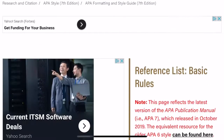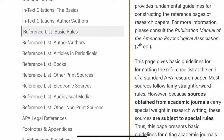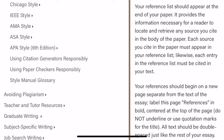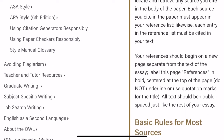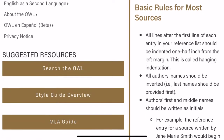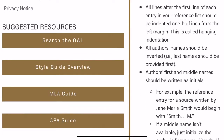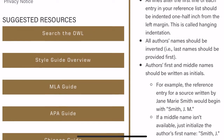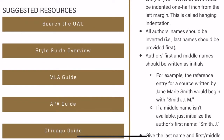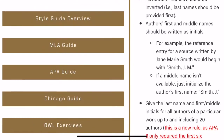Now if we go to the Reference Page, this is just a list of the basic rules for the reference page. Please read through that. It's also really helpful to go to the sample paper for the APA style. If you read through this, it's going to help you tremendously and make sure that you're doing this correctly and getting full credit.